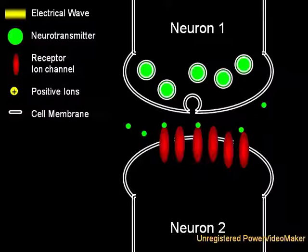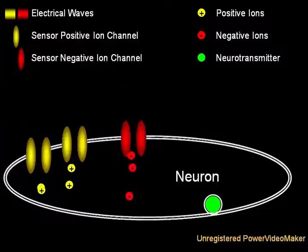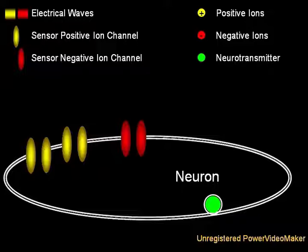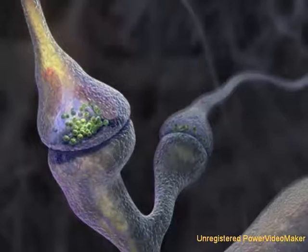But others allow negatively charged ions to flow into the cell. These can essentially cancel out any positive waves, thereby preventing the cell from releasing neurotransmitter, and are therefore called inhibitory synapses.